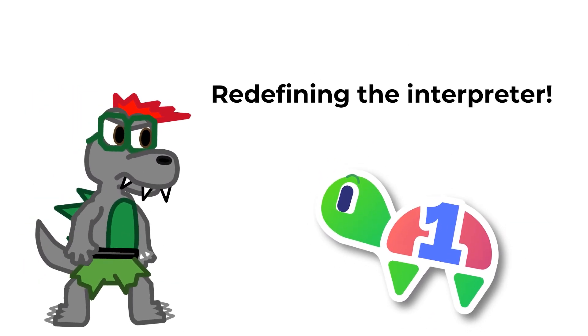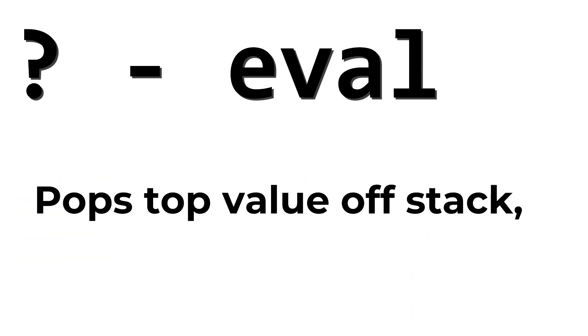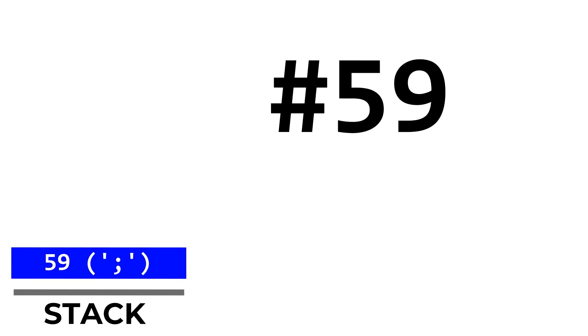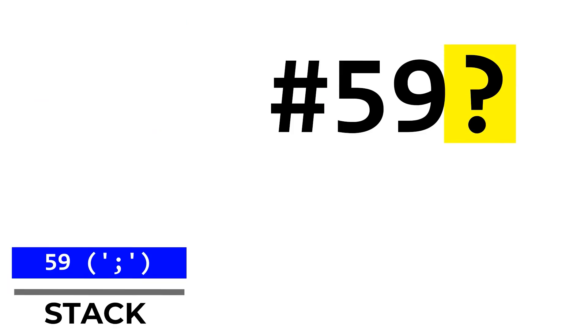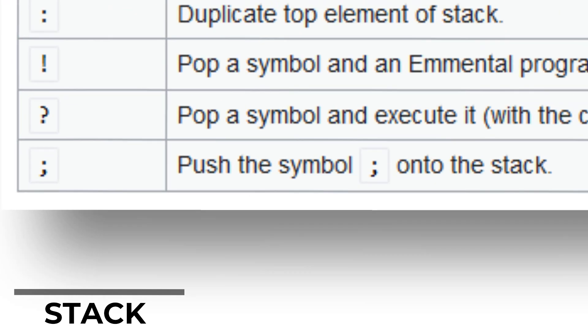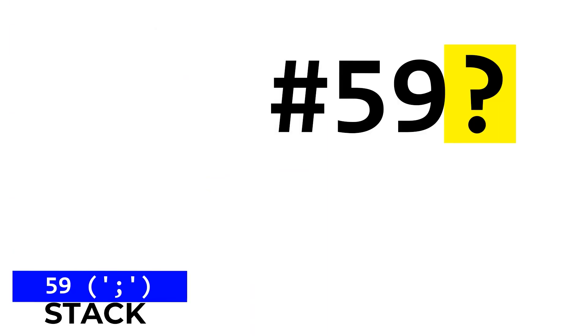Well, remember what I said about redefining Emmental instructions? Emmental provides an eval instruction, where it will pop the top value off the stack and run it as an Emmental instruction. If we're not redefining anything, if we push 59 — the ASCII code for a semicolon — and then run eval, it will run the semicolon's instruction as if it were normal code. In Emmental, semicolon pushes a semicolon onto the stack. So that's what this program does.